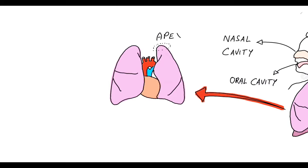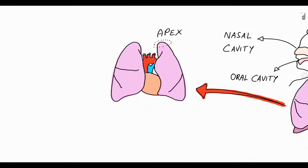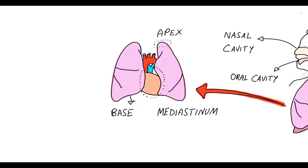The top rounded area of the lungs is known as the apex. The bottom of the lungs is convex shaped, which rests against the concave shaped diaphragm. The mediastinum is the area present in the thorax that holds the heart and other vital structures like the great arteries, veins and the trachea. The convex surface that faces the internal chest cavity is the costal surface.